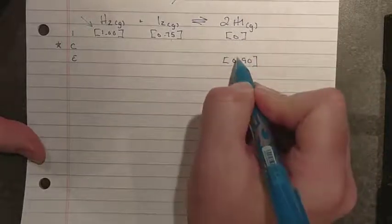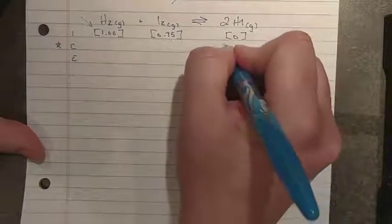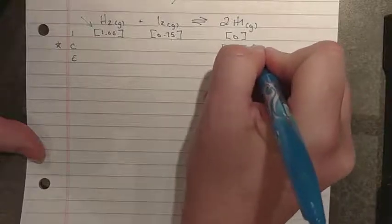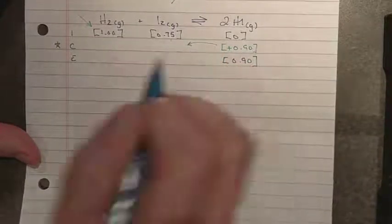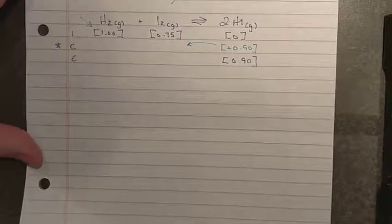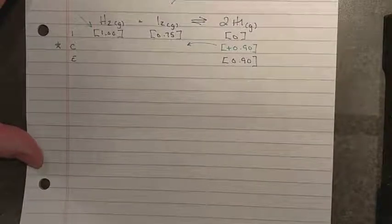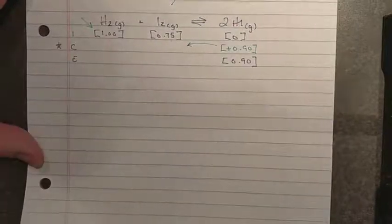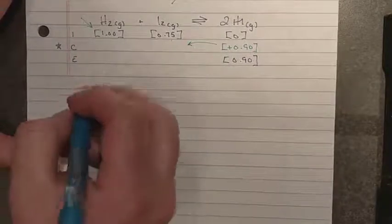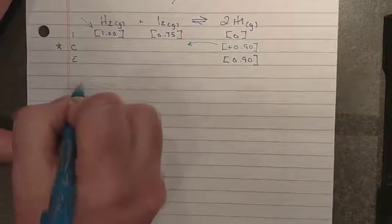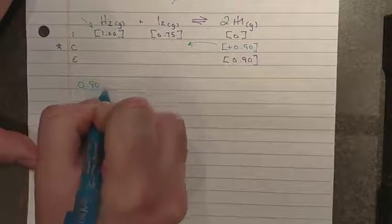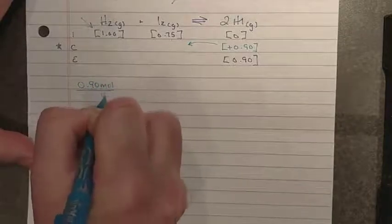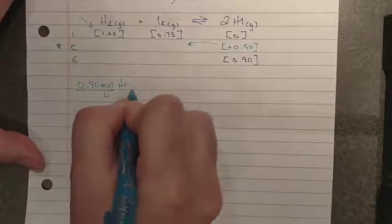So hydrogen iodide went from 0 to 0.9, so that is an increase in concentration of 0.90. I can use this to make predictions about what the other changing concentrations will be using my stoichiometric ratio from the balanced equation. So in this case, I have 0.90 moles per liter of hydrogen iodide.